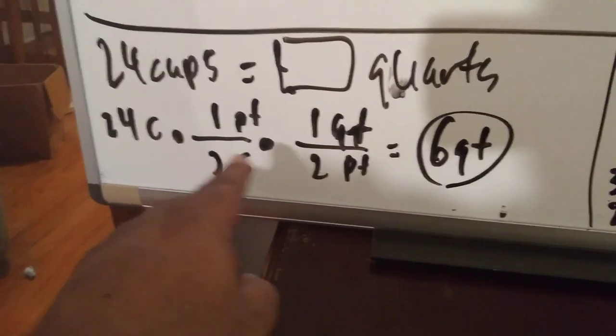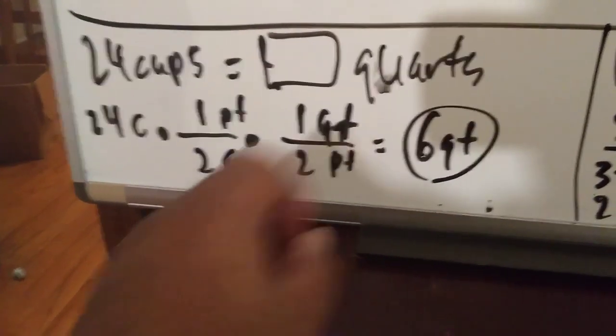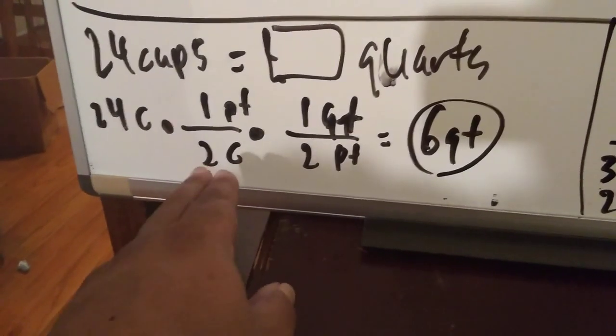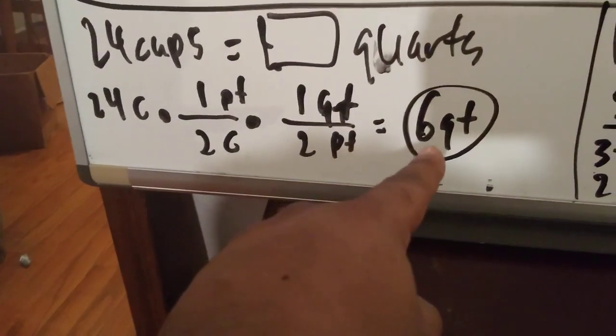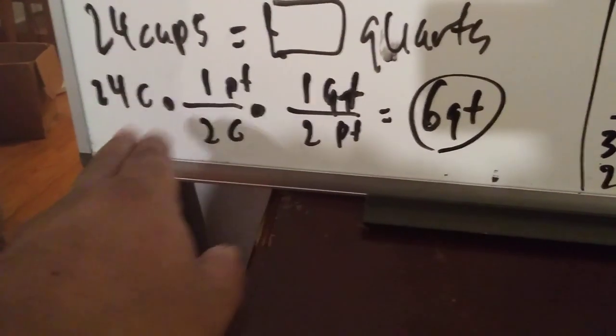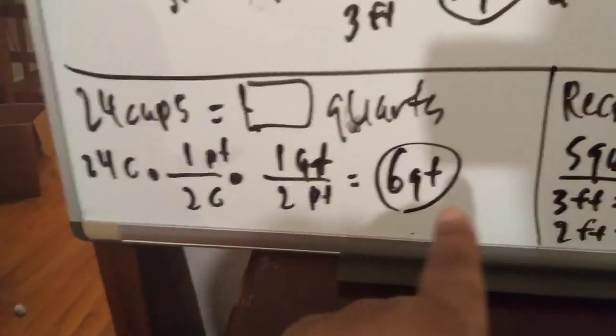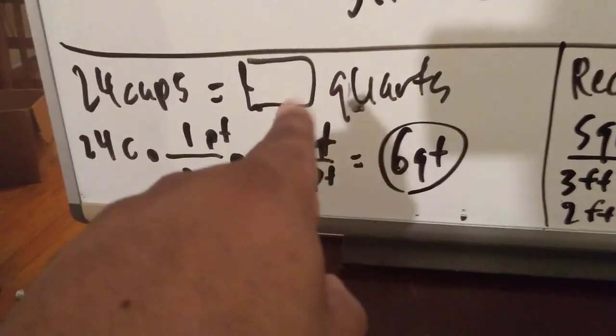So that means 2 cups is 1 pint, and 2 pints is 1 quart. So the twos are down here, but these twos you can put together and make 4. 4 going into 24 six times, that's why 6 quarts left over, because the pints cancel and the cups cancel. So that's how you do this problem, so 6 will go right there.